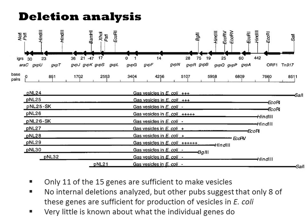They go on to dissect the gene cluster by examining truncations from the 5' and 3' ends. From this, they can trim the device down to only 11 genes.